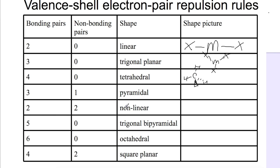Another shape is pyramidal, where you've got three bonding pairs and one non-bonding pair. It comes out as a very similar shape to tetrahedral — it's just that one of those bonding pairs is replaced by a lone pair. The classic example is ammonia, with three bonding pairs to the H's. The lone pair repels more than a bonding pair, so the bond angle is slightly less than in methane because it's pushed down.